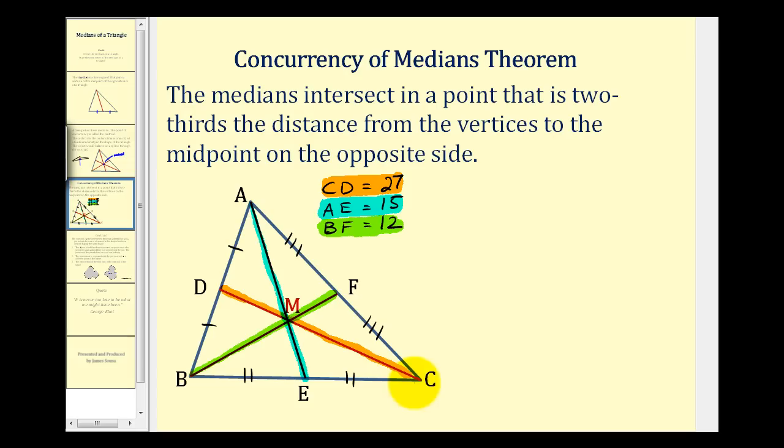So if we take a look at the median CD, if we know the length is twenty-seven units, CM would be two-thirds the total distance. Well two-thirds of twenty-seven would be eighteen, leaving one-third of the distance for the segment MD, and that would be nine.